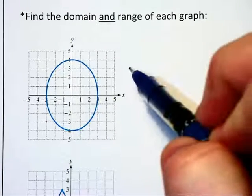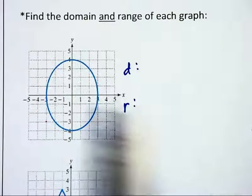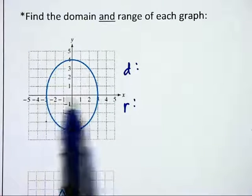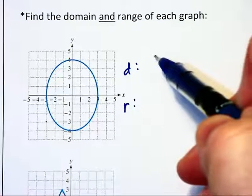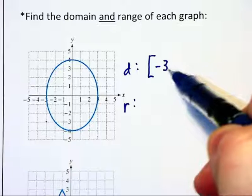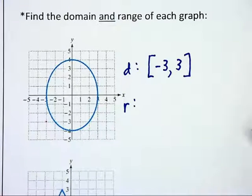So let's find the domain and range of each of these graphs below. Notice on this first problem, it extends horizontally from negative 3 to positive 3, including both of those values. So we will have the closed interval from negative 3 to positive 3.